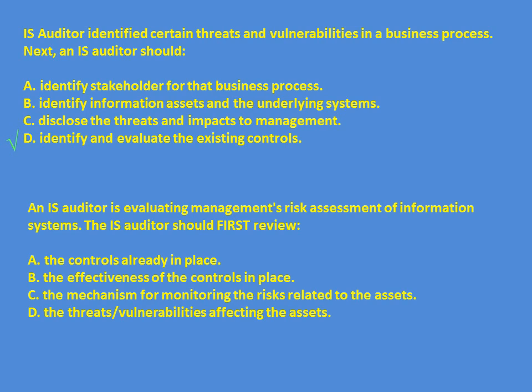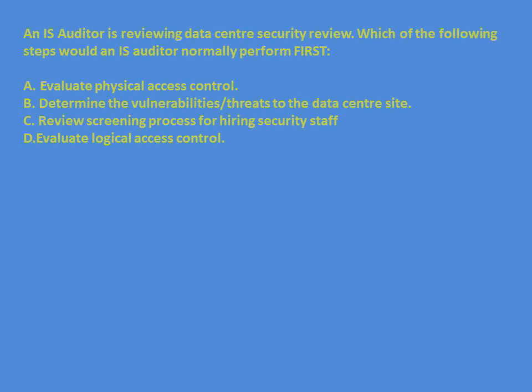Next question: A CISA auditor is evaluating management's risk assessment of an information system. What should be his first review — controls already in place, effectiveness of controls, mechanism for monitoring risk, or threats and vulnerabilities affecting the assets? Only when we understand the risks can we assess whether controls are appropriate or effective. The answer is to understand the threats and vulnerabilities affecting the assets; options A, B, and C are subsequent steps.